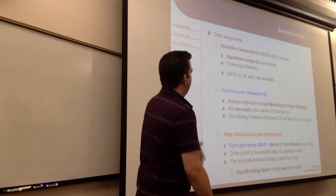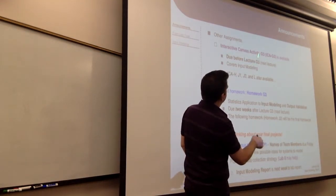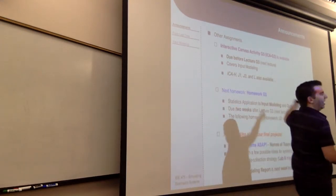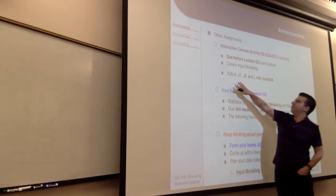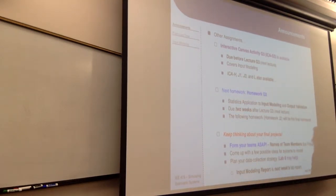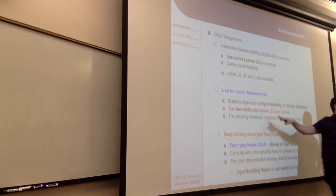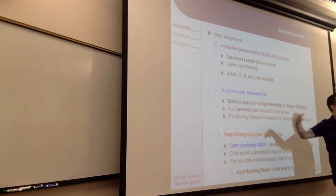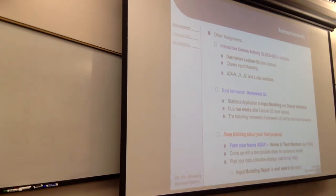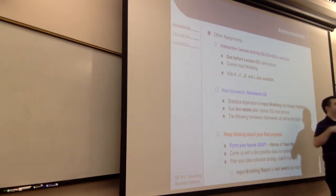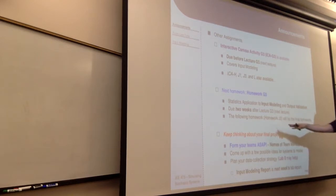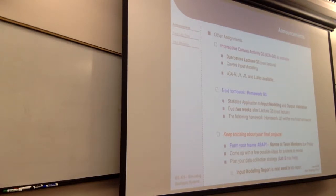About a week and a half after that is the input modeling report — roughly one to two pages. It's just meant to identify what system you're studying and show some data you've taken that you view as inputs for input modeling, so you have stochastic models you can use as you start building in Arena. Separately from the final project, there's ICA G3 available, four more ICAs before the final exam ICA, and the second-to-last homework is out with two questions: one on input modeling and one on output validation, due two weeks from Thursday.